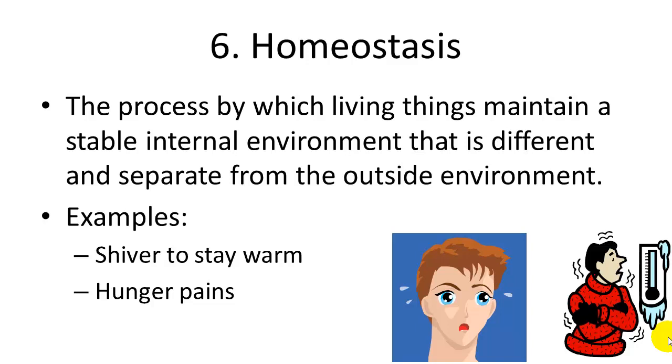The sixth characteristic of living things is homeostasis. Homeostasis is the process by which living things maintain a stable internal environment that is different and separate from the outside environment. What this means is that all living things strive to keep themselves in balance. For example, humans need to stay at an internal temperature of 98.6. If we get colder than that, we shiver to warm up. And if we get warmer than that, then we sweat to cool down.